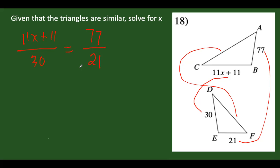So we have: 11x plus 11 over 30 equals 77 over 21. Let's check the correspondence — 77 over 21. That's correct.